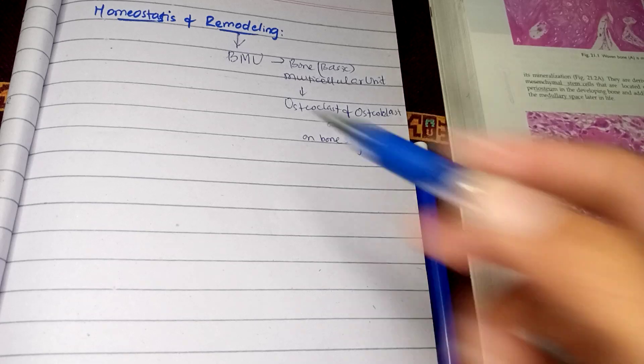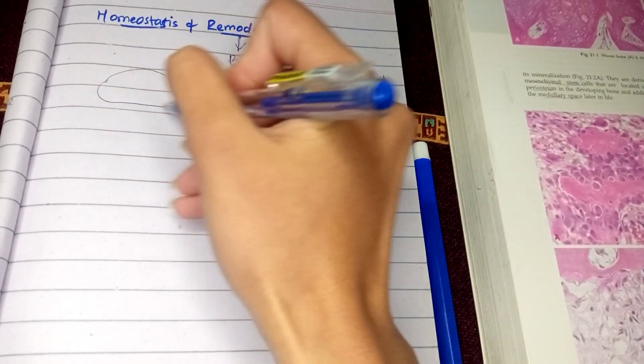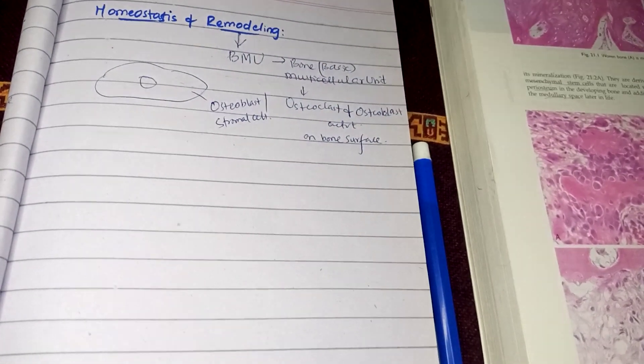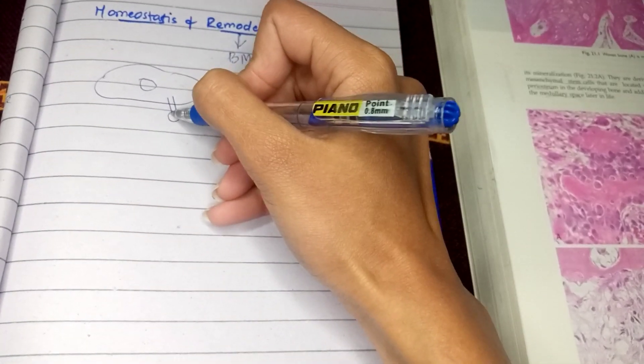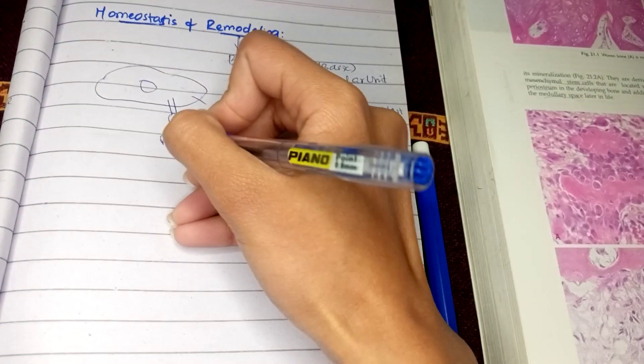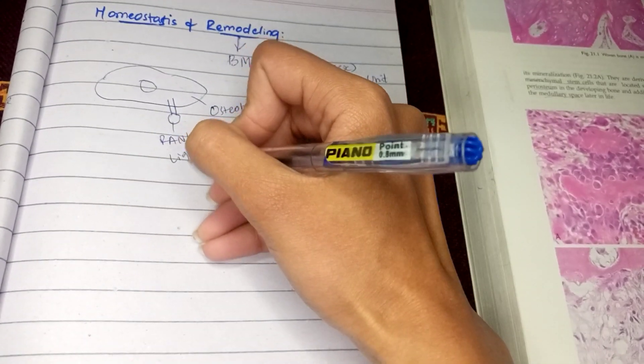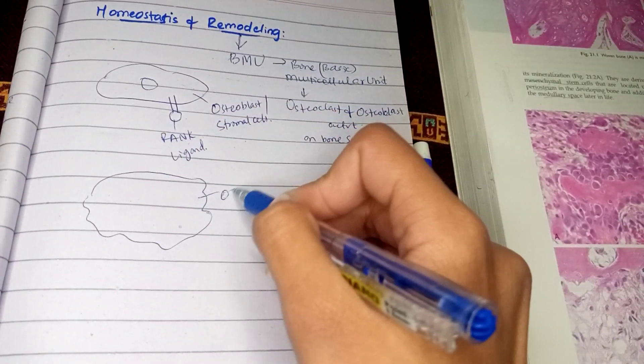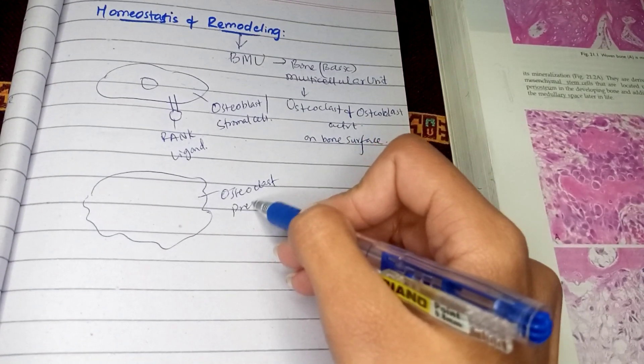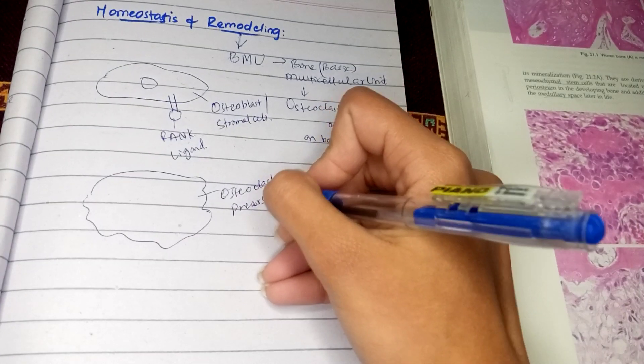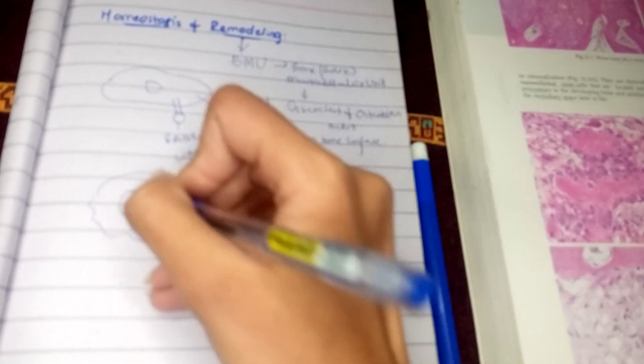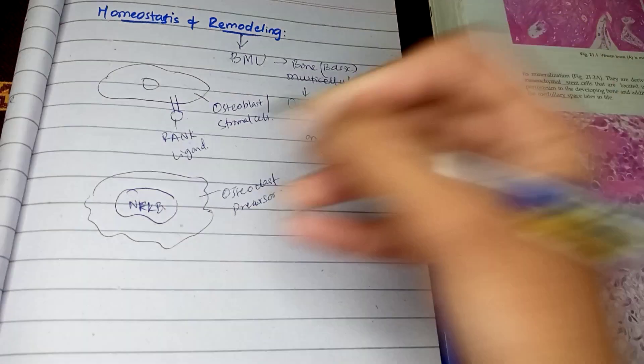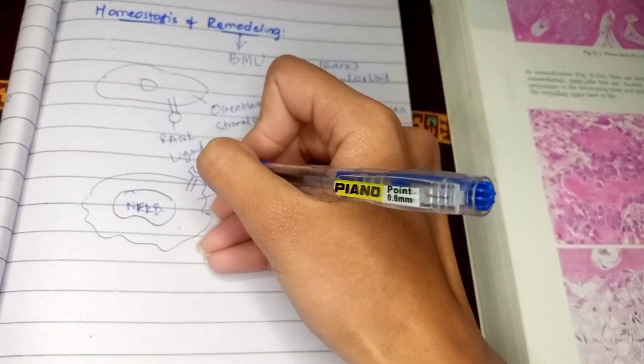Now how is this pathway regulated? First, suppose this is an osteoblast or stromal cell and these cells have a receptor known as rank ligand. On the other side, this is the osteoclast precursor cell having the receptor NFKB, and this cell has a receptor named rank.